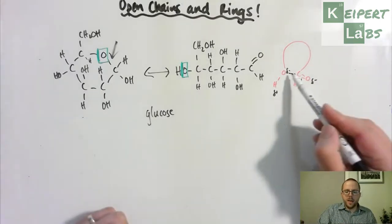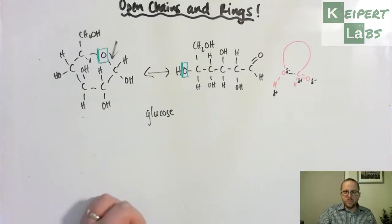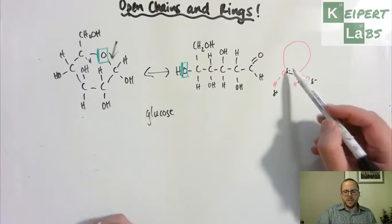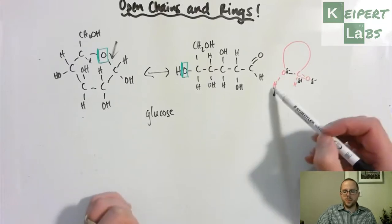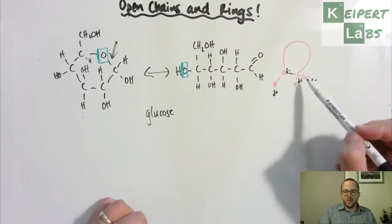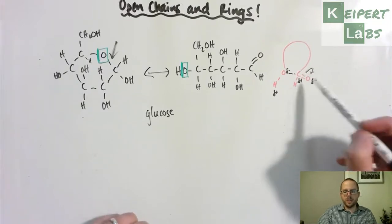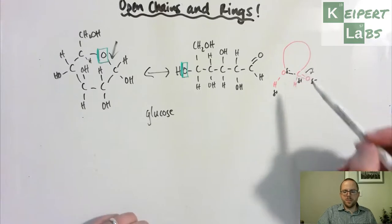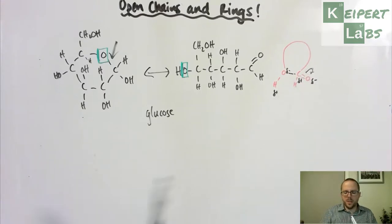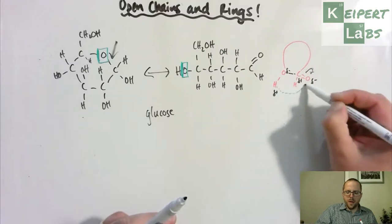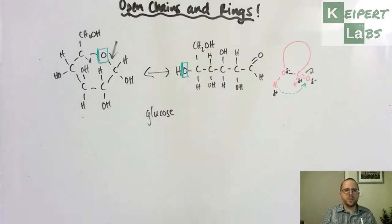And then what that can do is that this oxygen has too many bonds and then one of these bonds has broken. It puts the electrons back onto the oxygen to make the carbon still attached to four things. And then what that does is that this hydrogen can relocate to be attached to the oxygen over here.